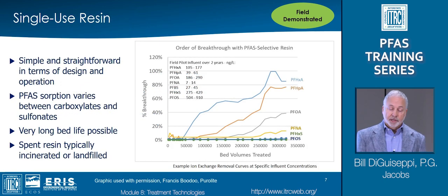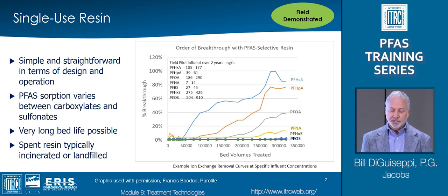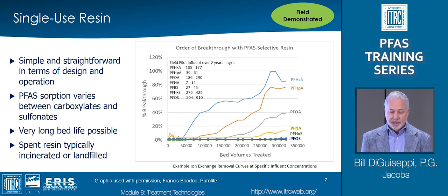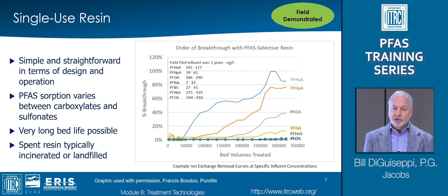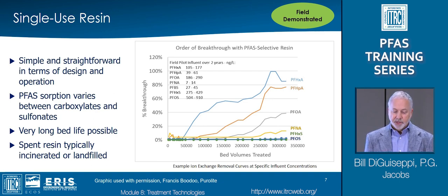There are two kinds of ion-exchange media resins: single-use and regenerable. Single-use ion-exchange resins are straightforward in terms of design and operation. Sorption varies with carboxylates typically breaking through earlier than sulfonates, as can be seen in this graph, where PFHXA starts breaking through after 50,000 bed volumes, but PFOS has still not broken through after 350,000 bed volumes. Depending on what parameters are being monitored and regulated, it could have a very long bed life with ion-exchange media, especially at the low concentrations typically found. Spent resins need to be disposed, typically by incineration or landfilling.